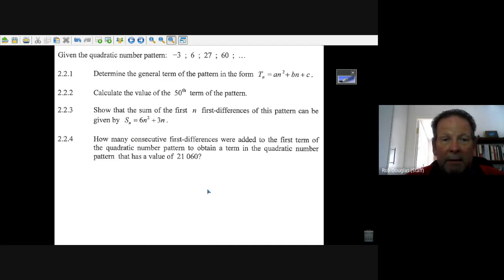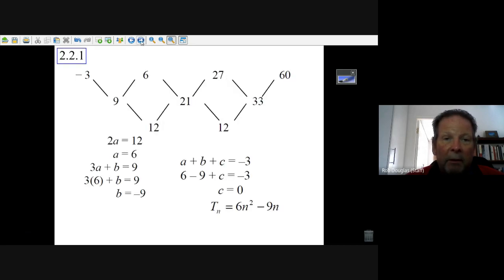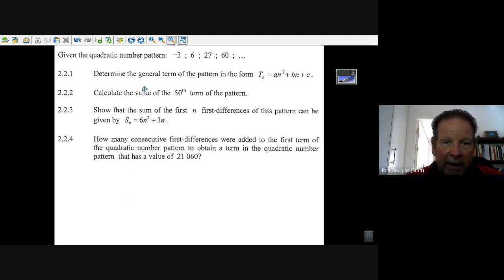Okay, now it says show that the sum of the first differences of this pattern can be given by Sn, the sum of the first differences is 6n squared plus 3n. Well, what we have to do is go look at our triangle. These are called the first differences. So it's 9, 21, 33. We want to find that the sum of these, we want to show that it equals 6n squared plus 3n.